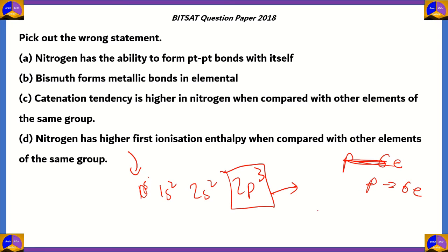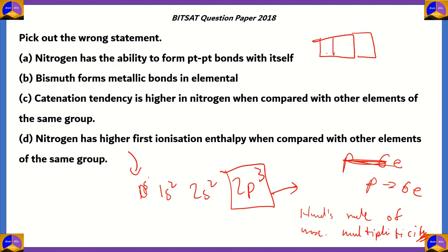According to Hund's rule of maximum multiplicity, electrons half-fill all three p orbitals before pairing. A half-filled p orbital is very stable. Therefore nitrogen has high stability, meaning higher first ionization enthalpy is needed to remove an electron. Since nitrogen's valence shell is 2p, its small size also contributes to higher ionization enthalpy. So option D is a true statement.